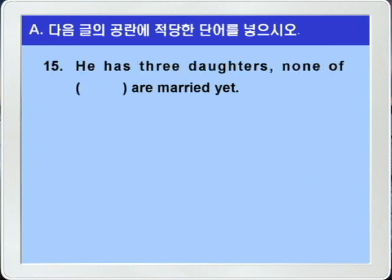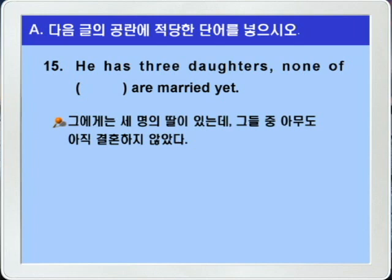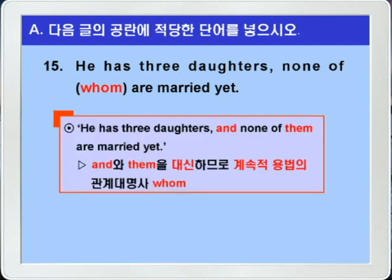15번입니다. 'He has three daughters none of blank are married yet.' 그에게는 세 명의 딸이 있는데 none of blank 그들 중 아무도 아직 결혼하지 않았다, 이런 의미의 문장인데요. 선행사가 three daughters, 즉 사람이고 전치사 of의 목적어에 해당하니까 목적격 관계대명사 whom이 들어가면 되겠죠. 'He has three daughters and none of them are married yet'이란 문장에서 접속사 and와 목적격 them을 대신하는 계속적 용법의 관계대명사 whom이 들어간 것입니다.